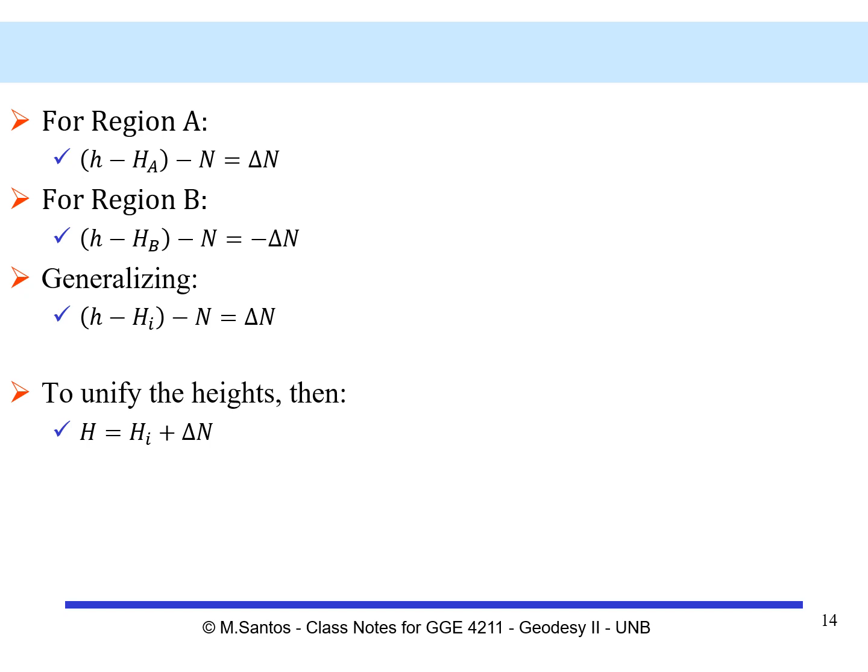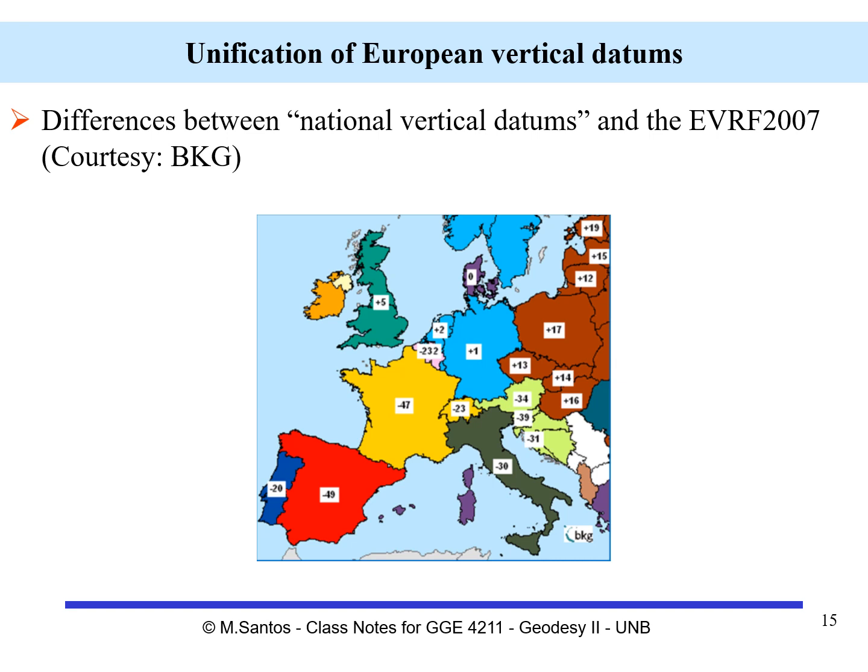The other term would be a regional datum offset. As an example, I'm showing here a figure obtained from BKG, the mapping agency of Germany, which shows the computed offsets that would have to be applied to the vertical system of each country, so that all heights in Europe would be consistent with the European Vertical Reference Frame of 2007.